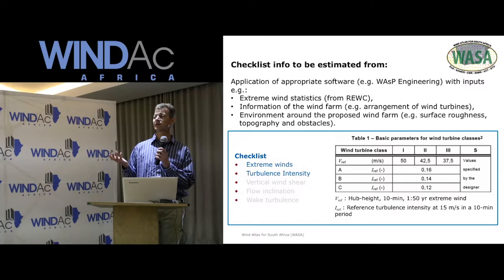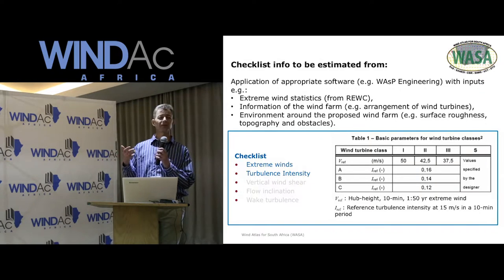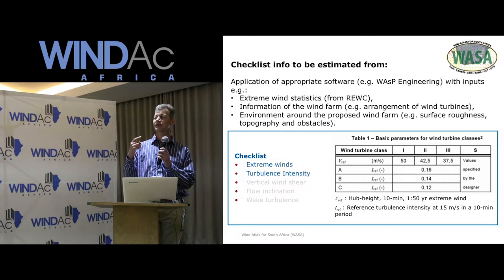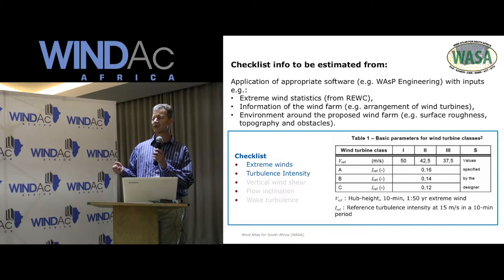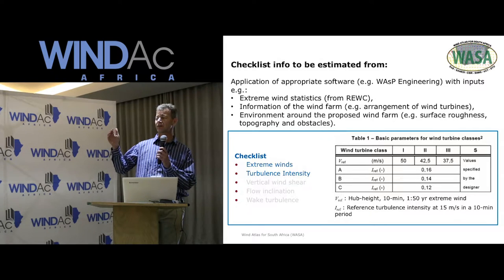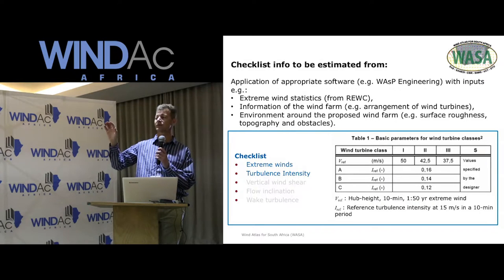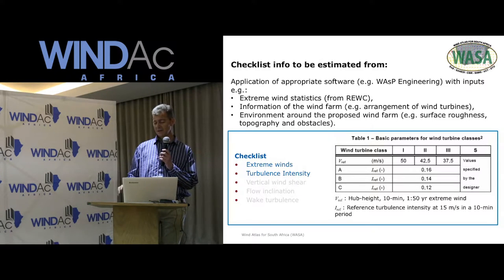The inputs include your extreme wind statistics, which are most important, your wind farm information such as turbine arrangement, and the environment around the proposed wind farm — surface roughness, topography, and obstacles. You then go through your checklist, and from the calculations and software output, you can decide which wind turbine class is most appropriate for your wind farm.